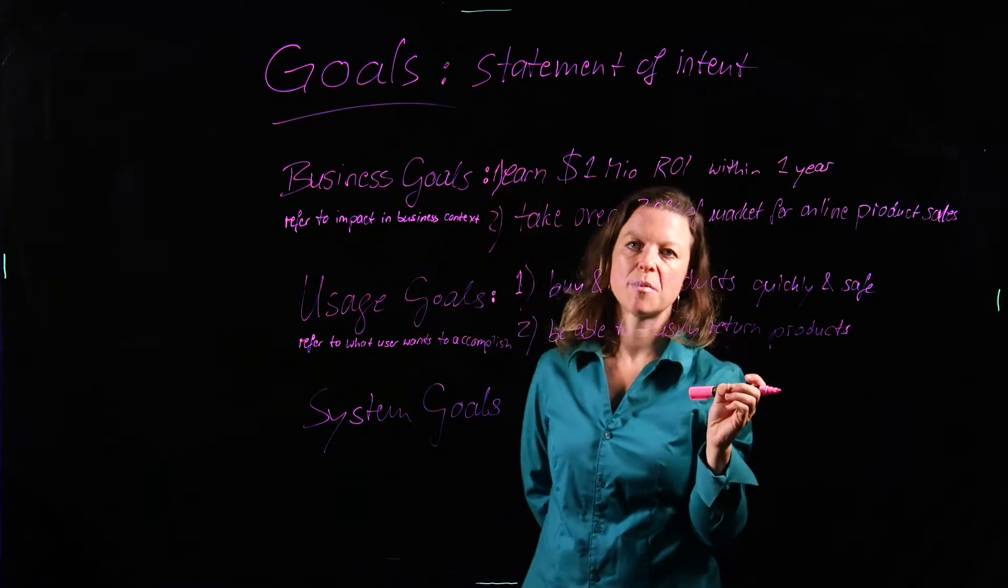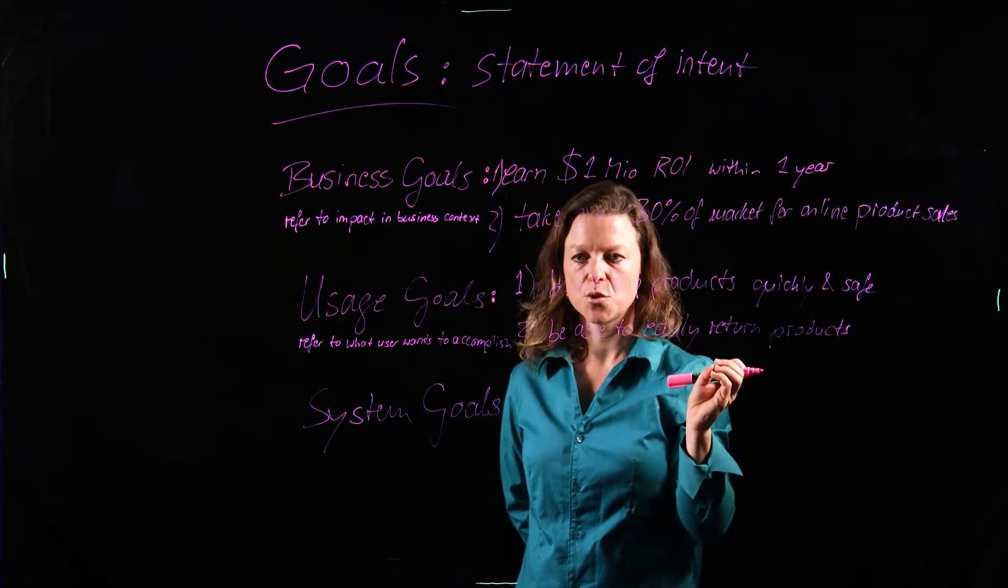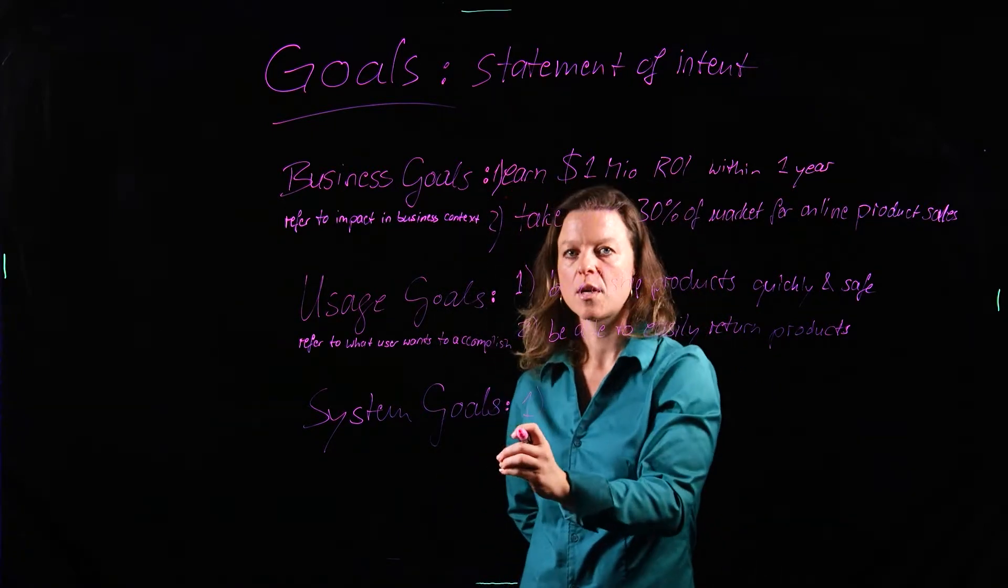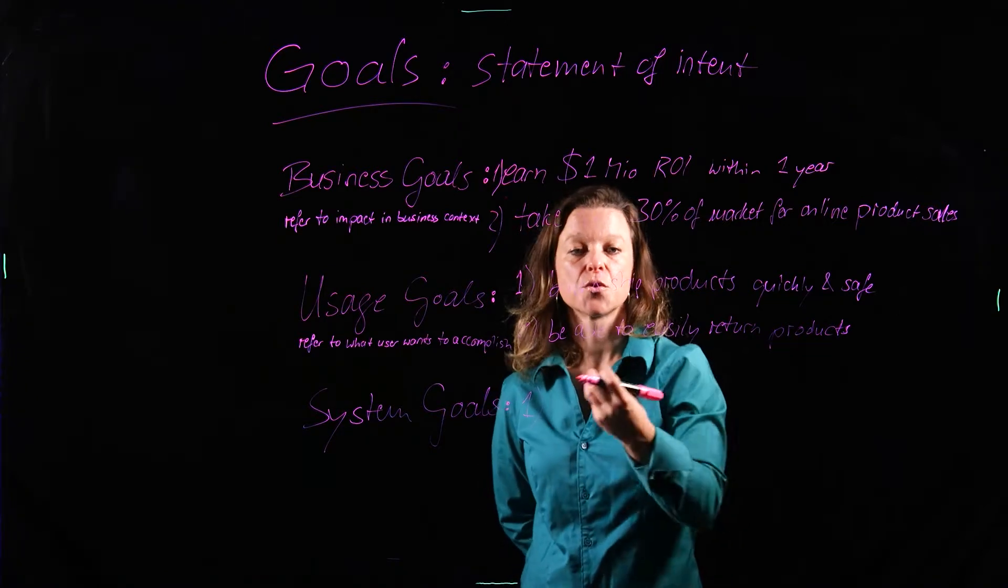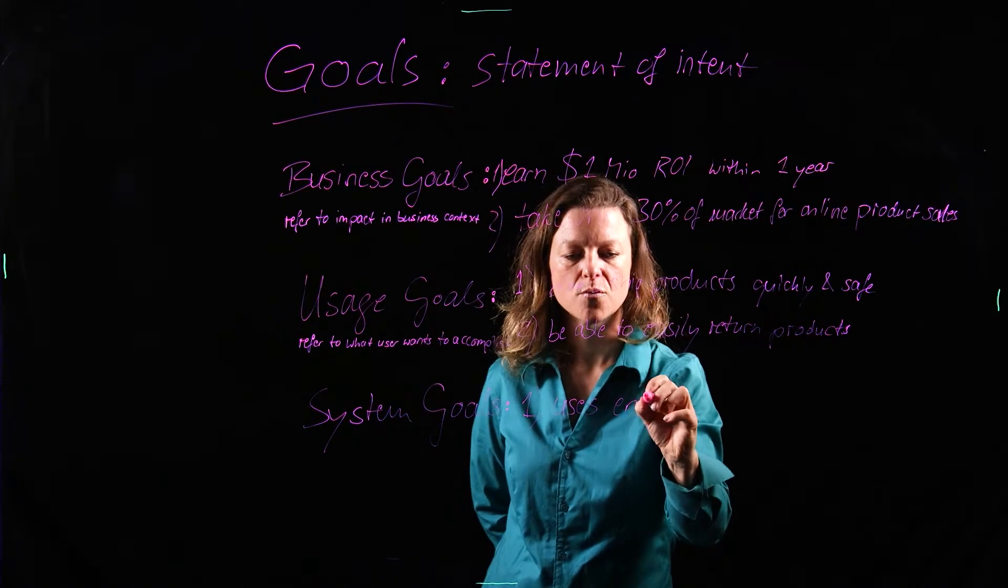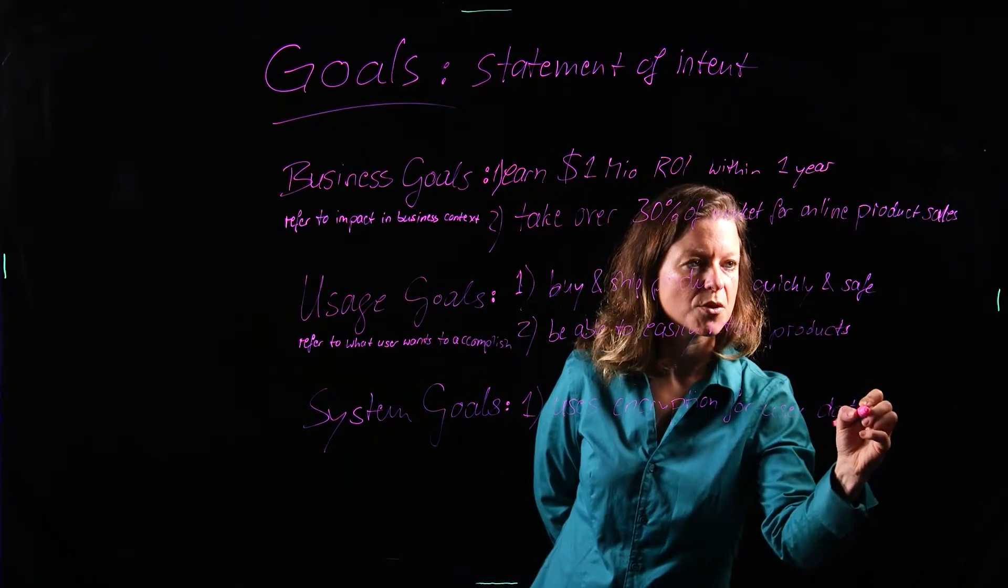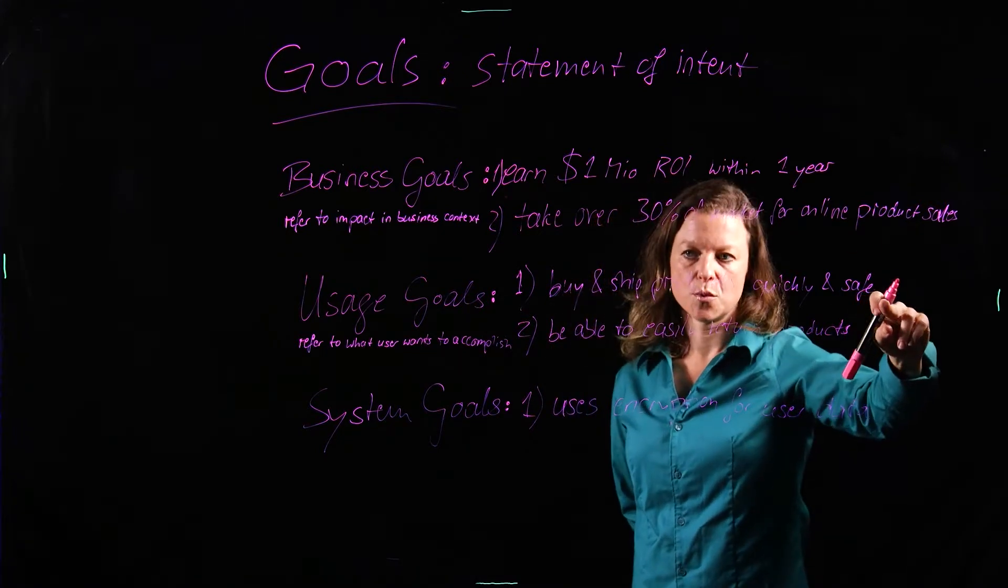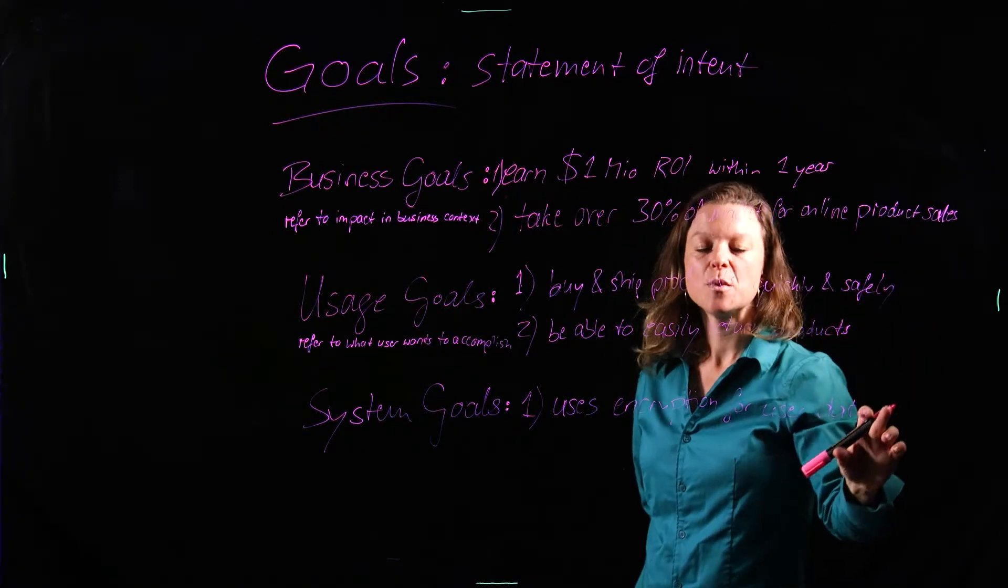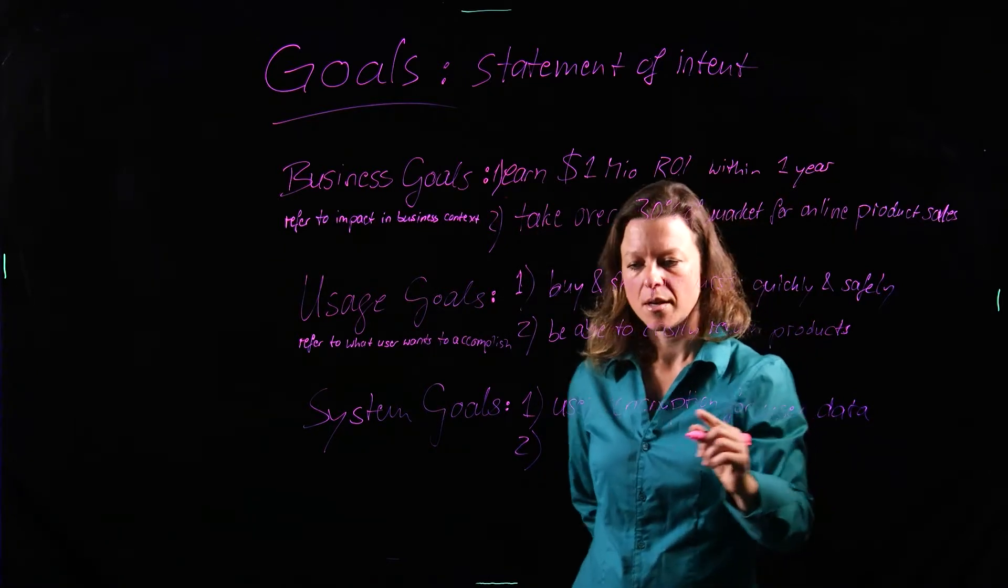So if you think back to the little lecture about problem orientation and solution orientation, here we are still on the problem level. We don't talk about the solution yet. On the third level for the system goals, we may have an idea of what the solution is going to look like. We are going to define some goals that are going to constrain the solution. So that may be something like uses encryption for user data. Because we said that one of the usage goals is we want to be able to buy quickly and safely. So we need to be able to protect our user data. And then a second one may be for easily returning products, allow for label printing.